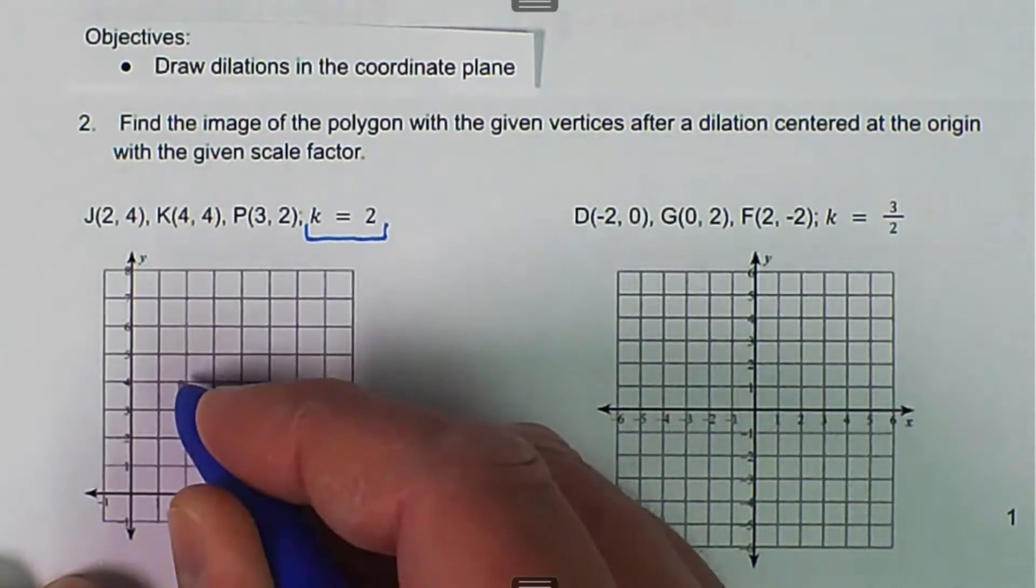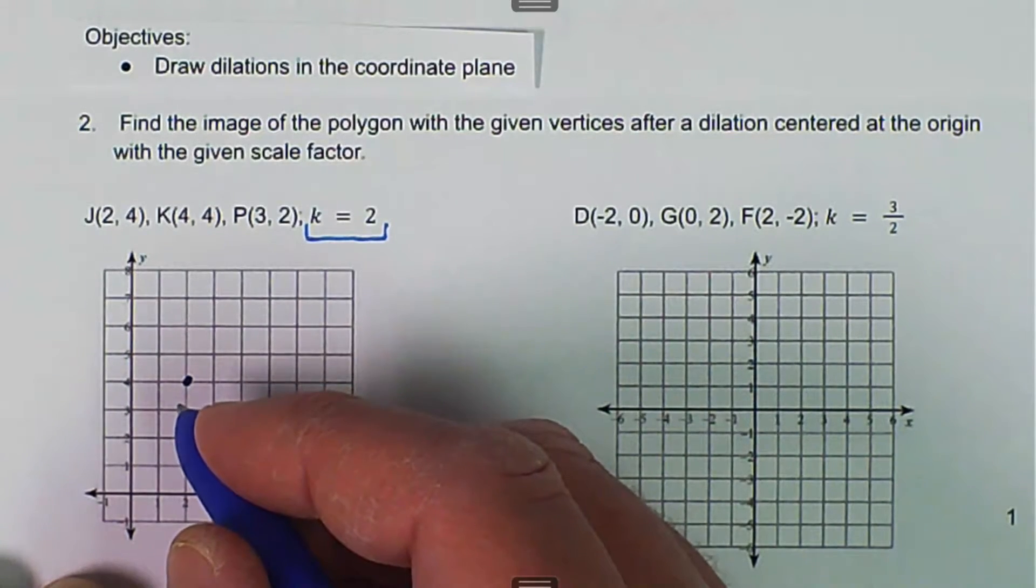The first example here, we're given a scale factor of 2. And the first thing I want to do is plot the preimage. So, J is 2, 4. So, over 2, up 4. And that's going to be J.